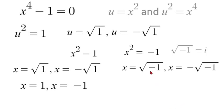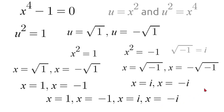But that means that we'll have an i value here and a negative i value. So x will be equal to i or negative i. Therefore our four answers are 1, negative 1, i, and negative i.